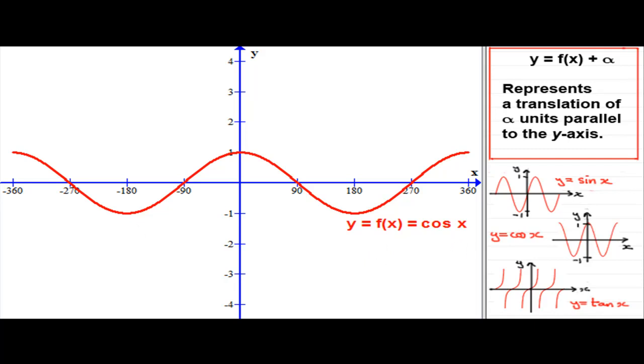I've let f of x equal cos x. So, what I'd like you to try and sketch is a couple of graphs. This one here, y equals f of x plus 2, which is going to equal cos x plus 2. And, I've got another one here. What about sketching y equals f of x minus 3? That would be cos x minus 3. Just pause the video and have a go at sketching those, and come back and see if you've got the same answer as I've got.